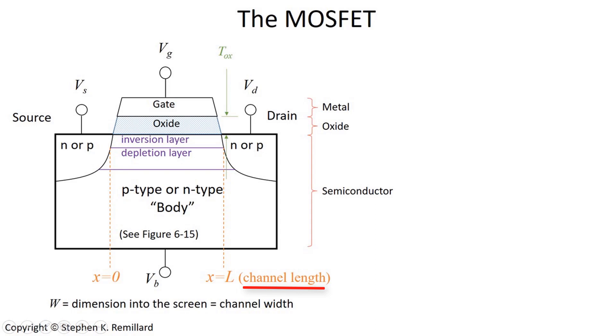One other dimension is the width W — the dimension into the screen — called the channel width. I have a three-dimensional perspective coming up where we'll be able to see W.